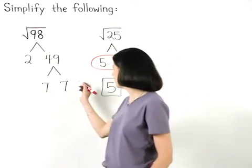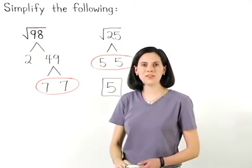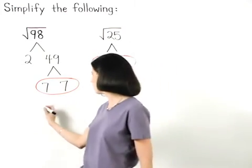So we have a pair of 7s in our factor tree. This means that a 7 can come out of the radical.